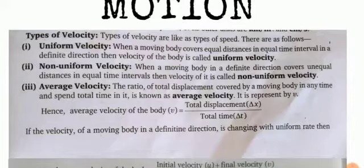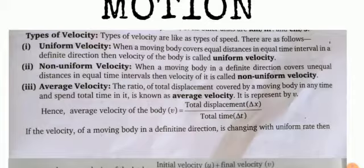Types of velocity are like types of speed. There are as follows. First topic is uniform velocity: when a moving body covers equal distances in equal time intervals in a definite direction, then the velocity of the body is called uniform velocity.